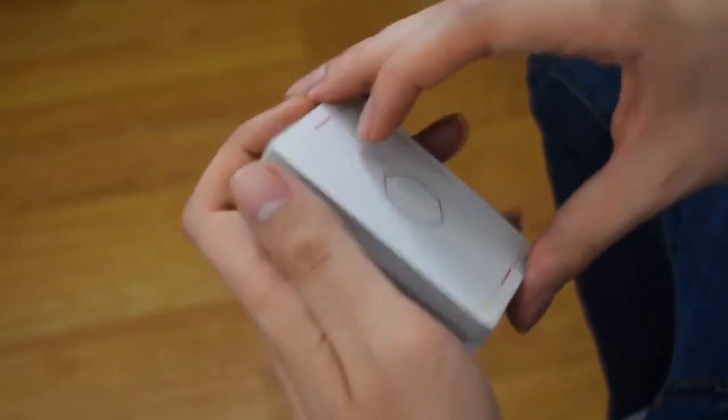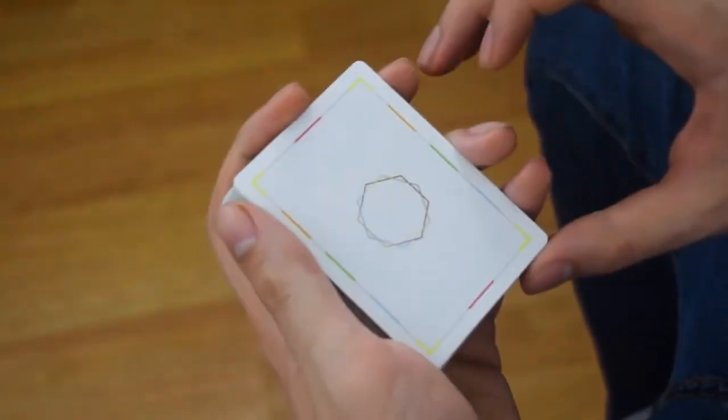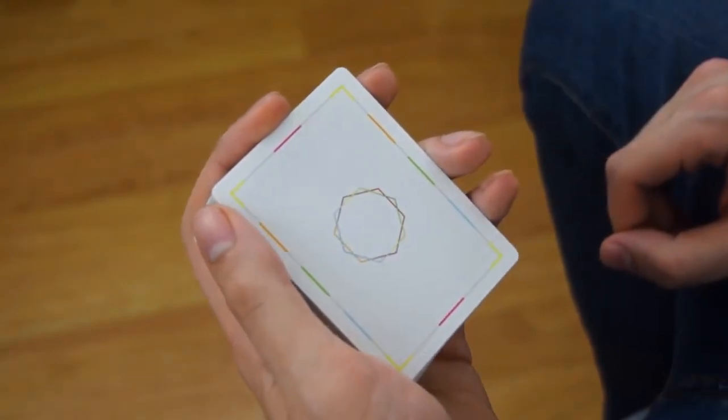In cardistry, every time you break off a packet, you reveal a new back design. This is the premise behind Technique, by using the colored borders as contact points.